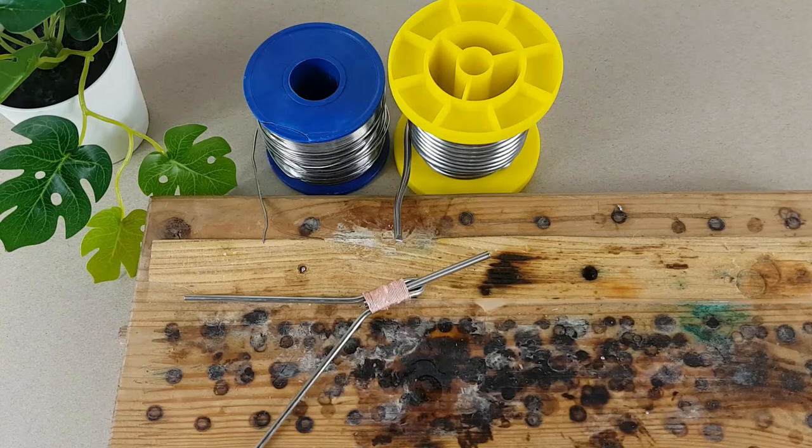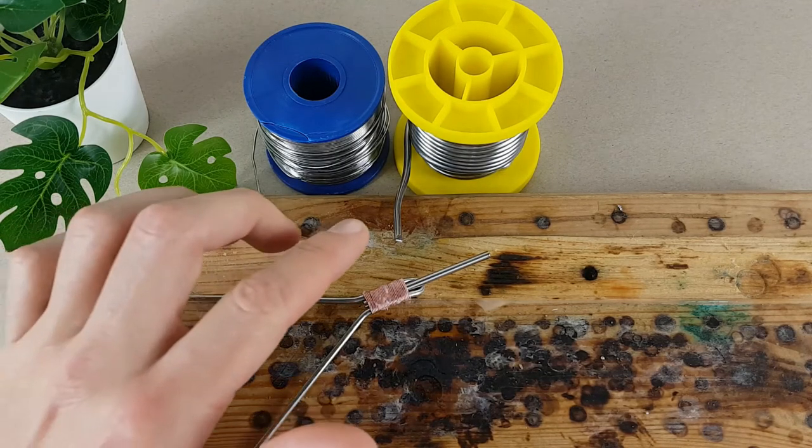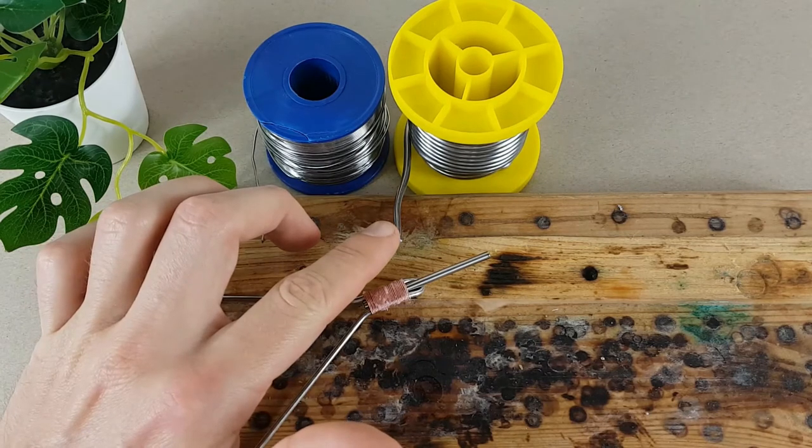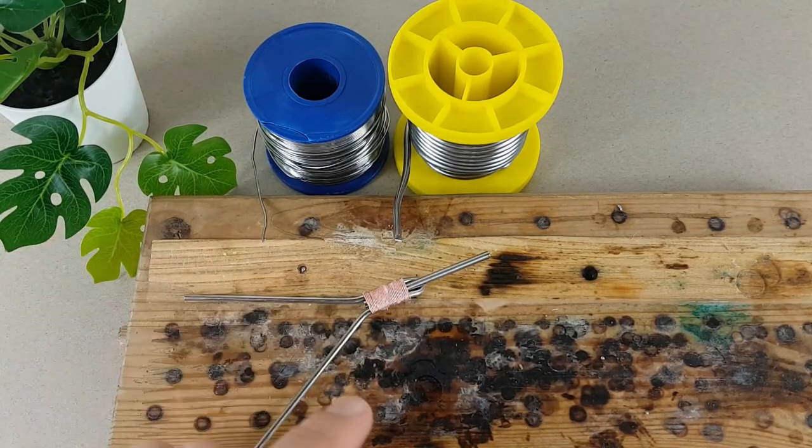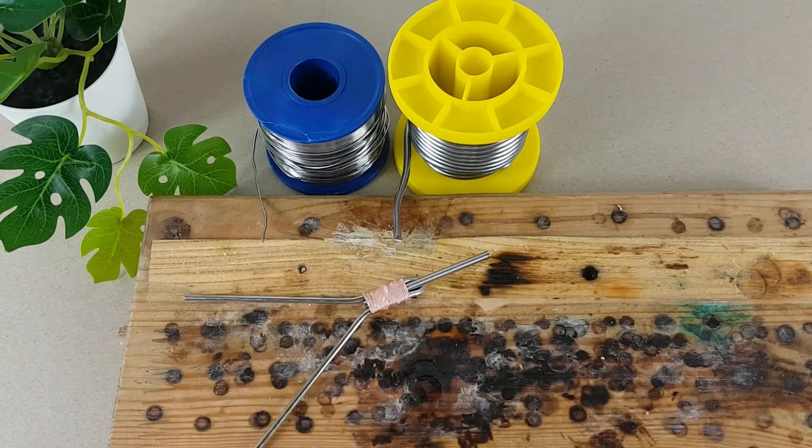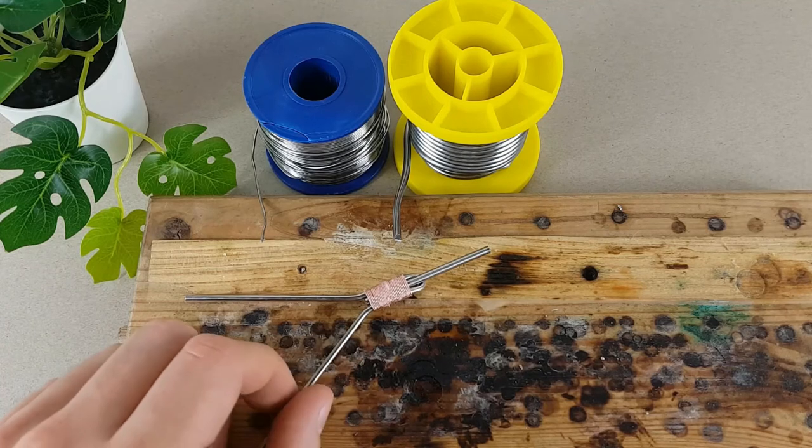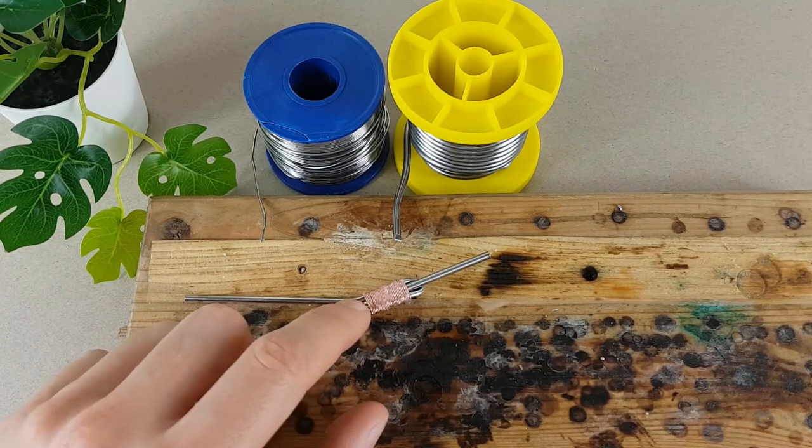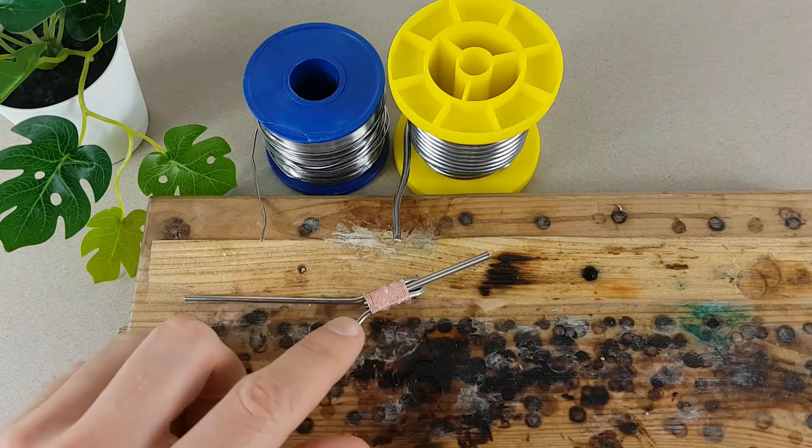It's time to solder. Here I have two kinds of soldering wire - this one is three mil thick, this one is one mil. I'm going to be using one mil to solder this part, because it will melt quicker and therefore it will go into the crevices between the copper wire quicker and solder the whole surface area.